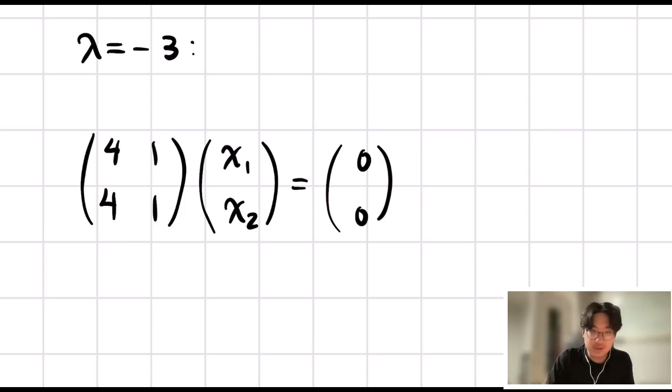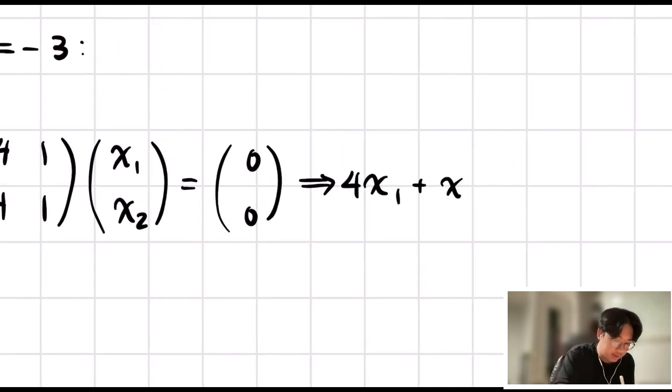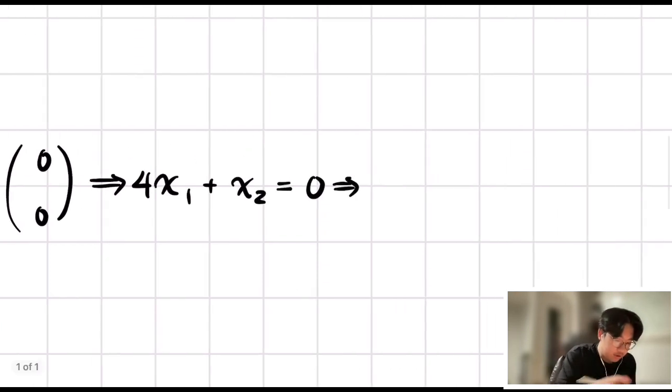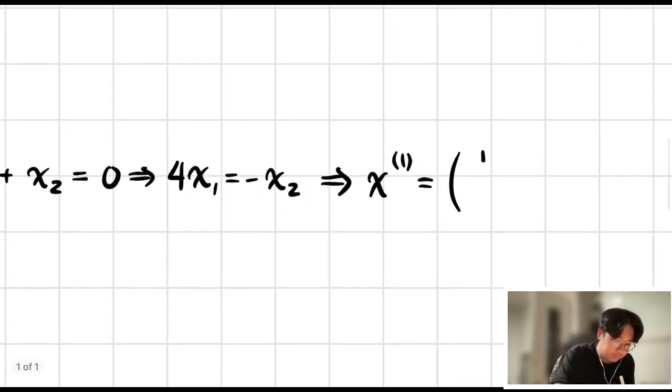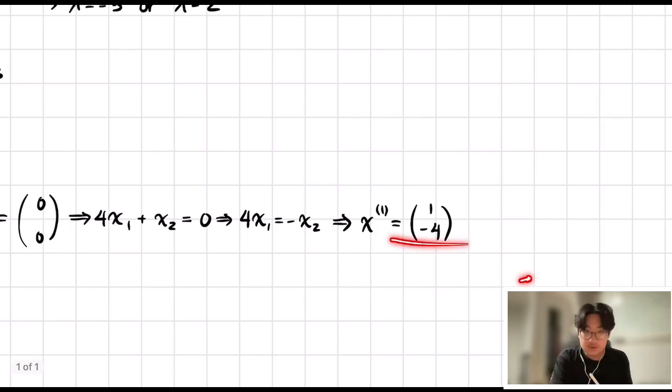You get that 4x1 plus x2 has to equal to 0, which then you can conclude that 4x1 is equal to negative x2. From here, you want to simply just pick quick and simple values of either x1 or x2 that'll lead to a cleaner, nicer eigenvector. In this case, we can pick x1 equal to 1, so 4 equals negative x2, so x2 equals negative 4. This right here is our eigenvector for this corresponding eigenvalue.